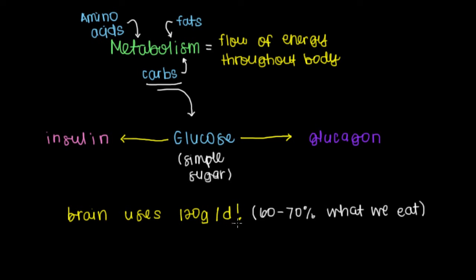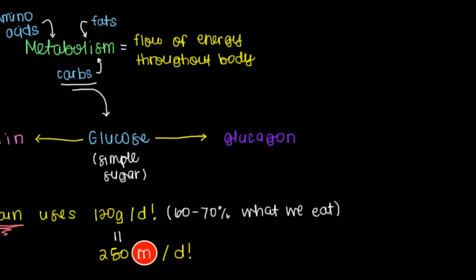But to put it in terms that I think you and I appreciate a little more, 120 grams of glucose comes out to be about 250 M&Ms in a single day. Now that's a lot of M&Ms. So you can see why it's really important to have enough glucose available for your essential organs to use. And thankfully we have these two hormones to help regulate the amount of glucose in our blood.